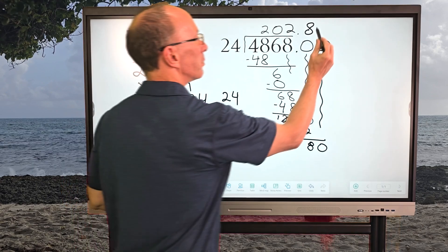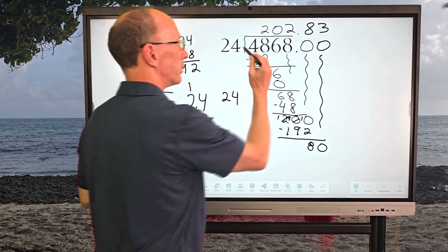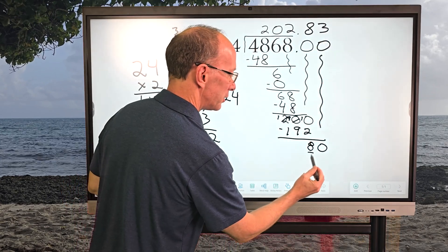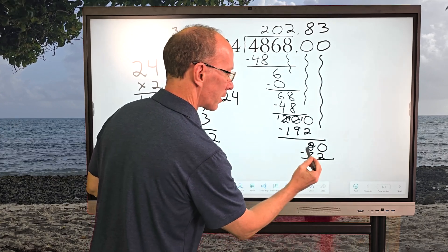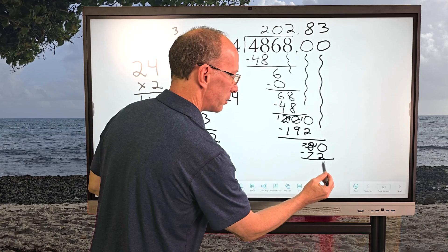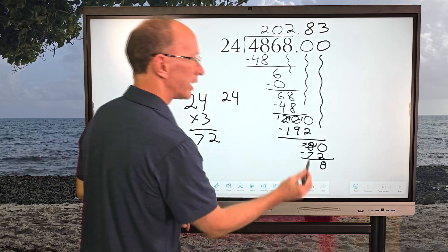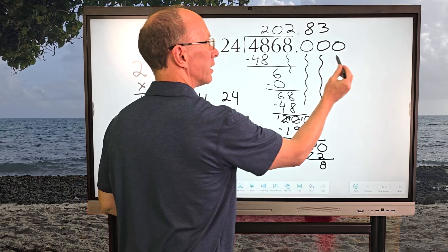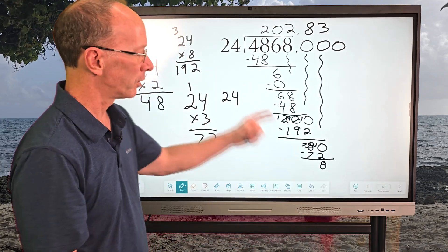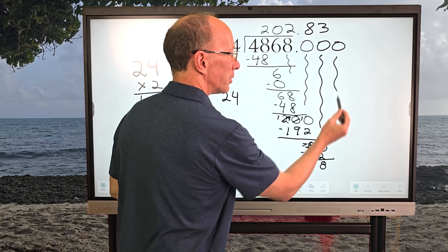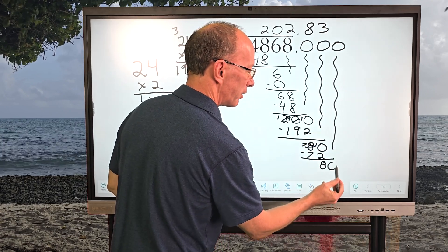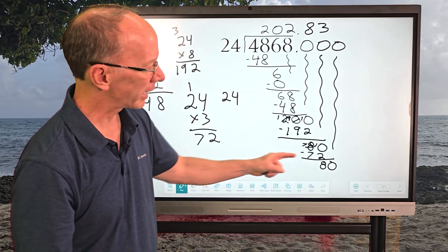So I'm going to put 3 right here. So 3 times 24 is 72. And then I'm going to subtract. Borrow right there. And this would be 8. Again, I have a 0 right here, because I can't put 24 into 8. So I need to drop down another 0. And we're all the way down here. And now you're going to notice, hey, look at this. I got an 80.